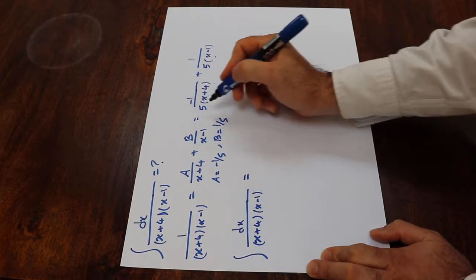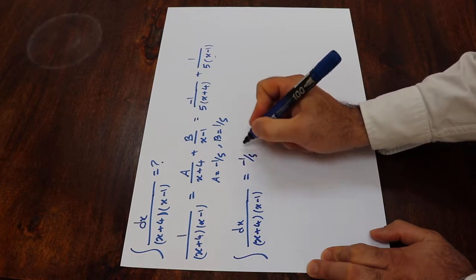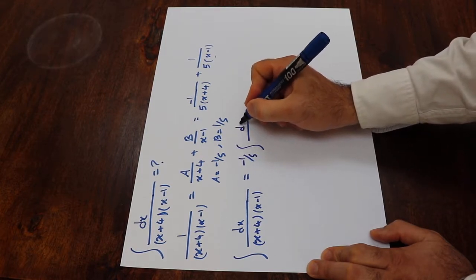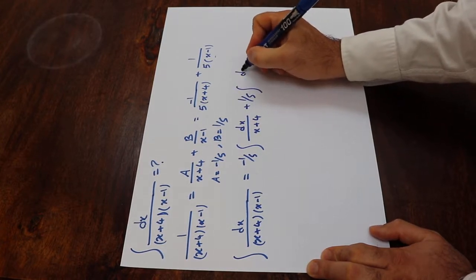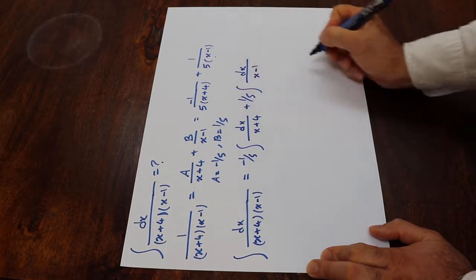Therefore, minus 1 divided by 5 is constant, I take it out of the integral: integral of dx x plus 4 plus 1 divided by 5, integral of dx x minus 1.